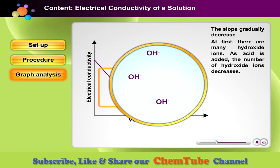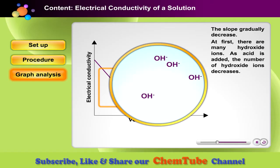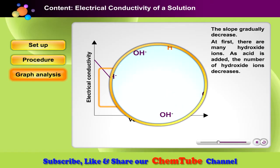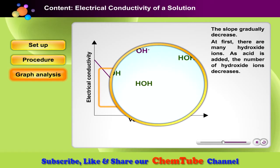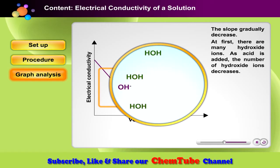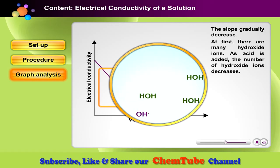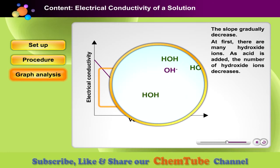At the beginning, there are many hydroxide ions present. When acid is added, hydrogen ions from the acid combine with the hydroxide ions to form water molecules. Thus, less and less hydroxide ions are discharged at the electrode. Therefore, the meter readings decrease with the increasing amount of acid added.